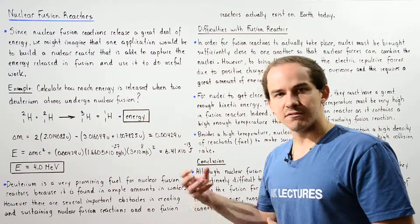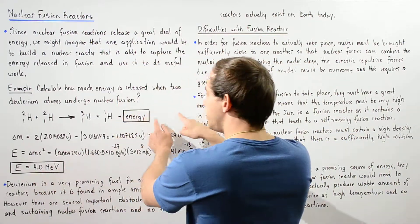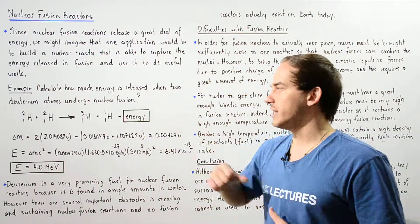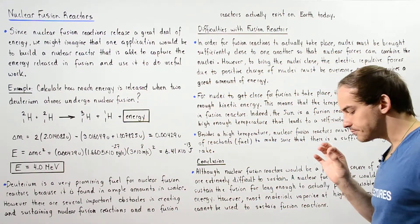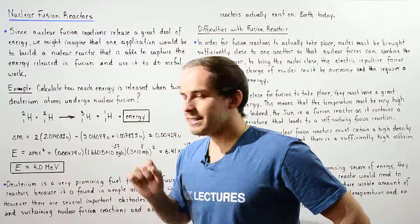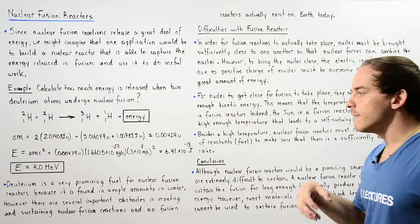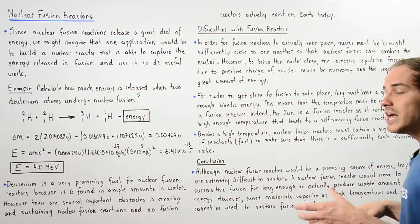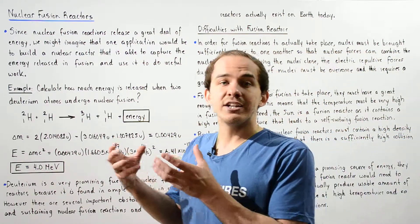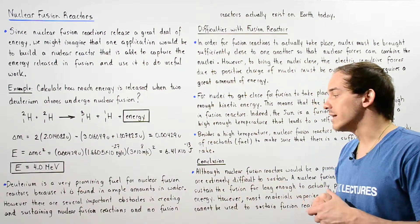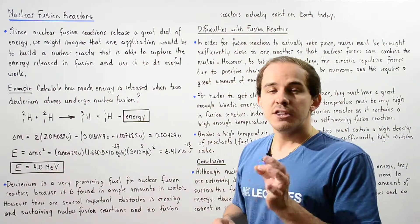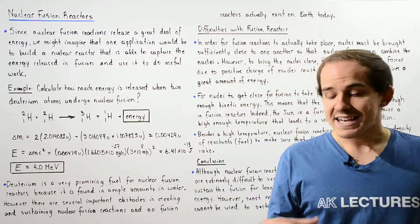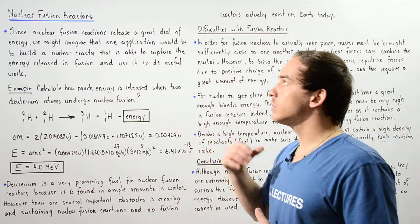This is approximately equal to 4.0 mega electron volts, which is a relatively high amount of energy released when we fuse two deuterium atoms to form tritium and hydrogen. Deuterium is a very promising fuel for nuclear fusion reactors because it is found in relatively great quantities in water. However, there are several important difficulties that must be overcome in actually producing a nuclear fusion reactor.